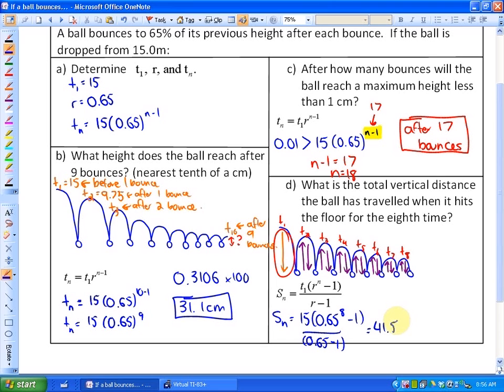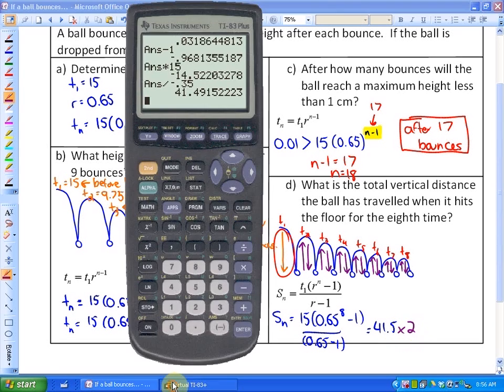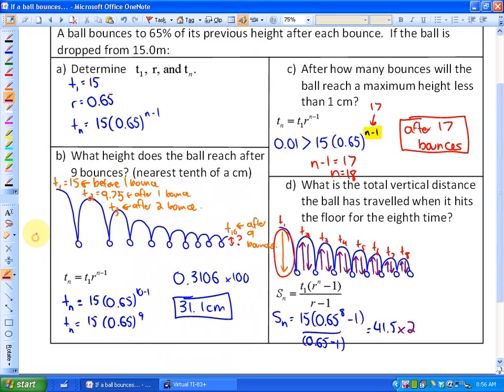However, what we need to be careful of is this just represents all the first eight terms only once. So what I need to do here is I'm going to double it, because what comes up must come down. So in that particular case, if I times it by two, I get 82 or 83.0, I should say. That would be 83.0.